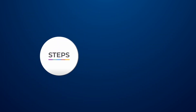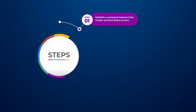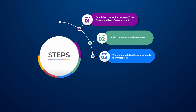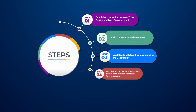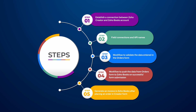These are the steps you need to configure to accomplish this requirement: establish a connection between Zoho Creator and Zoho Books account; form field connections and get to know the API names; create a workflow to validate the data entered in the orders form; create a workflow to push the data from the orders form to Zoho Books on successful form submission; and generate an invoice in Zoho Books after placing an order in the Creator form.